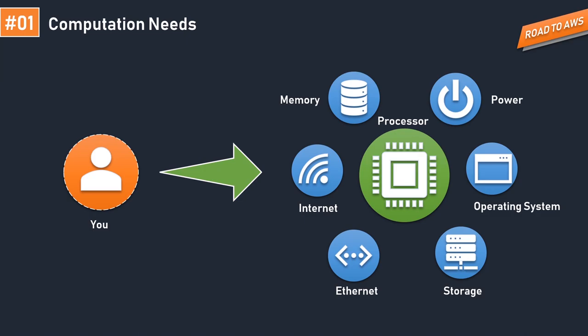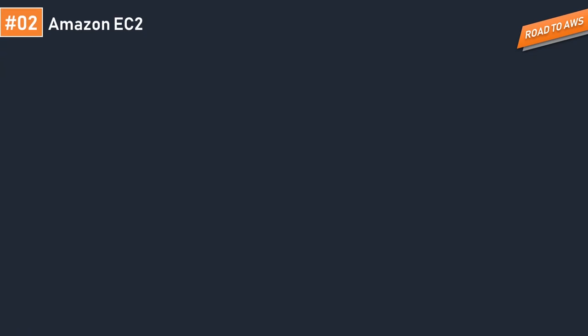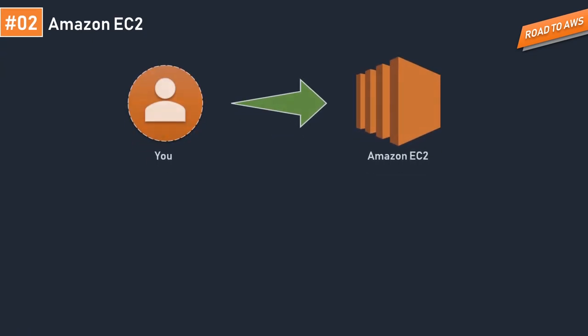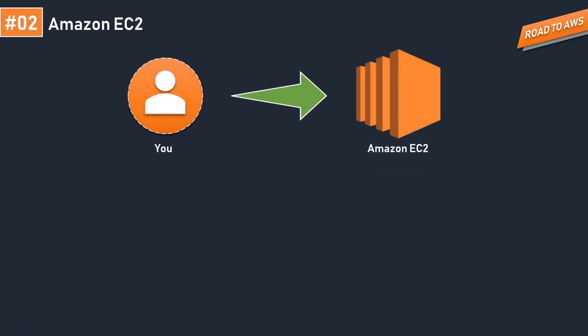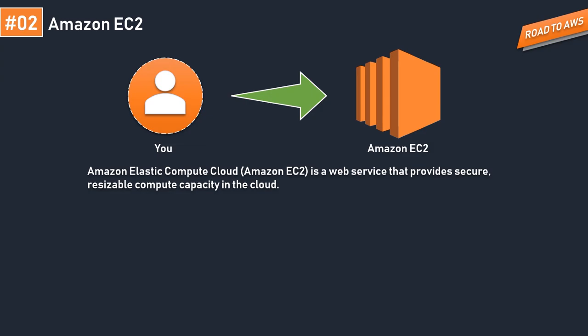But what if with time it needs an upgrade to meet the changing market? You would have to replace older hardware with newer ones, which would cost too much and wouldn't be a practical solution. This is the reason why, after so many advancements and having an idea of making life easier, there was a need for a facility that could cope with ever-changing needs and upgrades. That's where EC2 came into the picture. Amazon EC2 is a web service that provides secure, resizable compute capacity in the cloud.